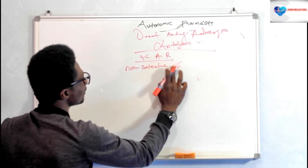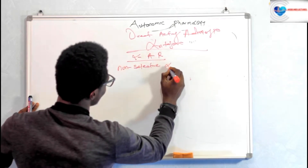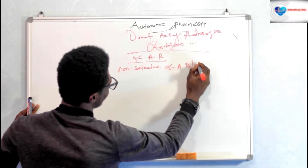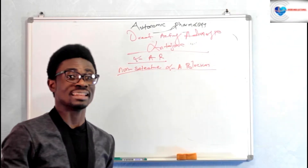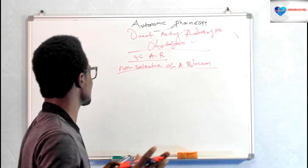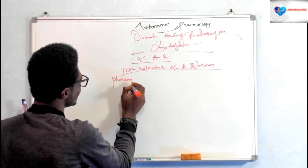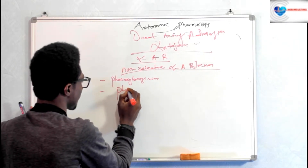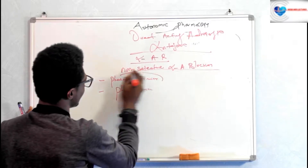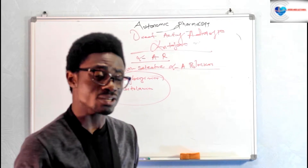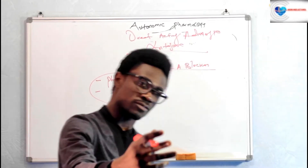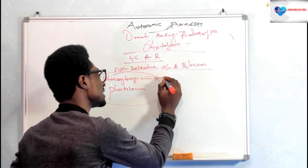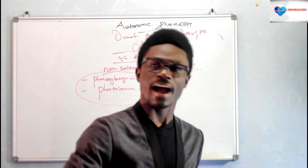We have a number of non-selective alpha adrenergic blockers, but at least you should know two of them. First we have phenoxybenzamine, and the second one is phentolamine. These two are non-selective alpha adrenergic blockers.